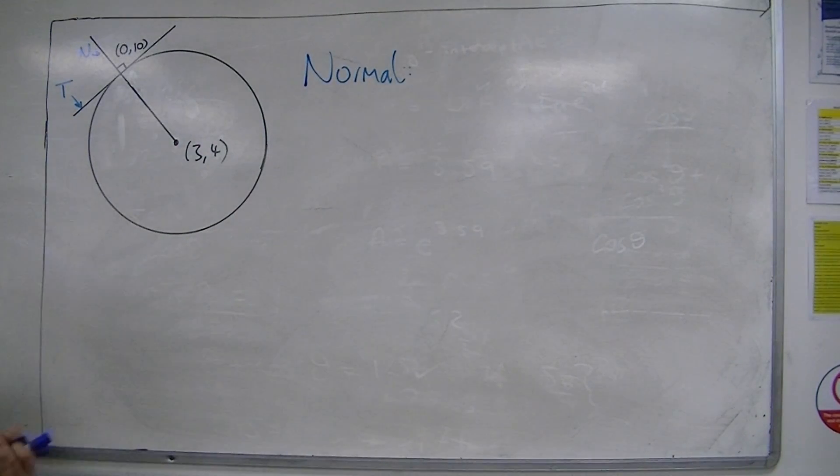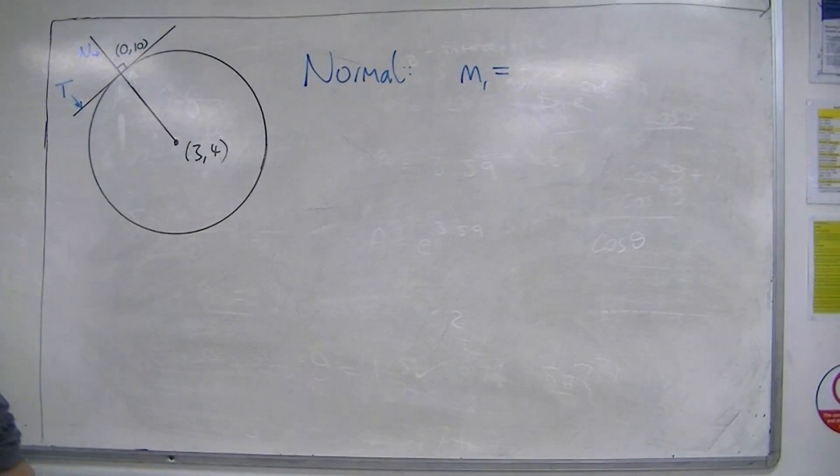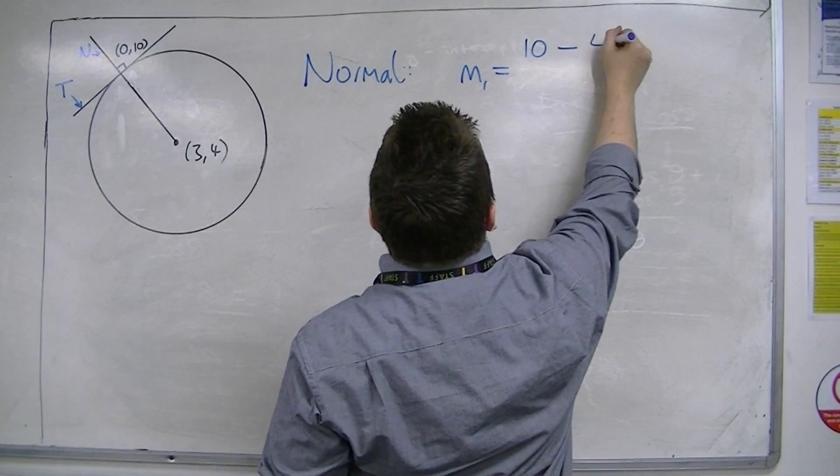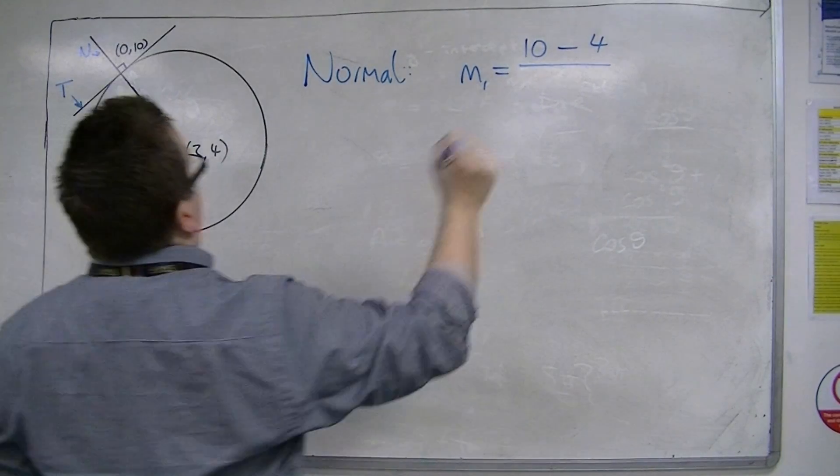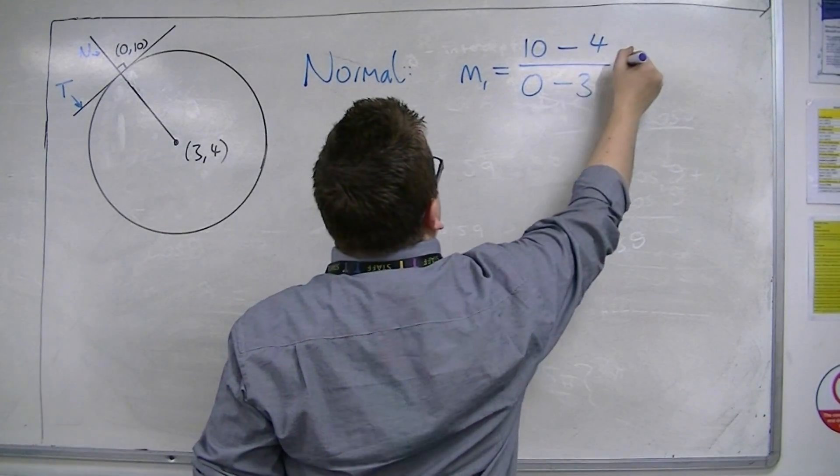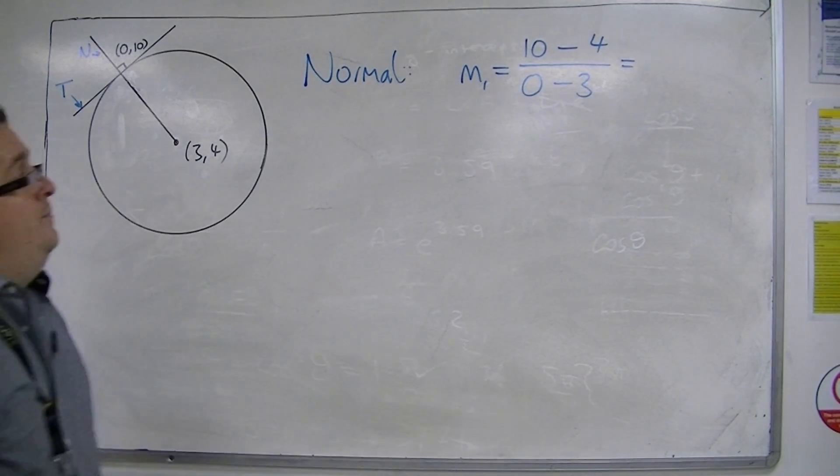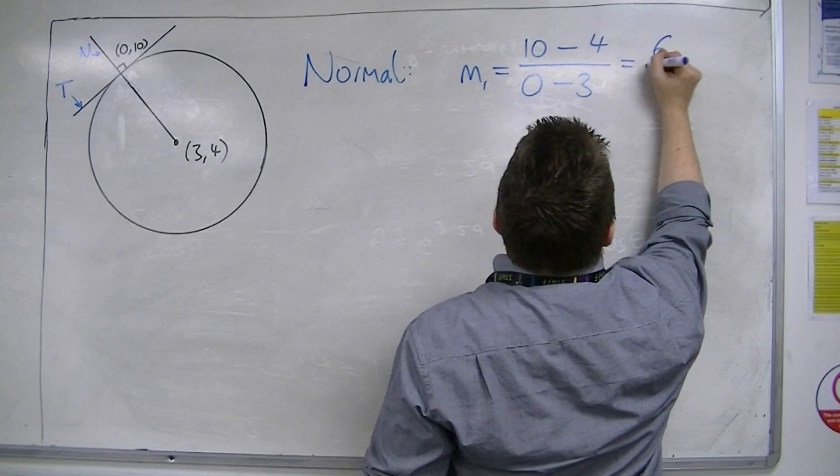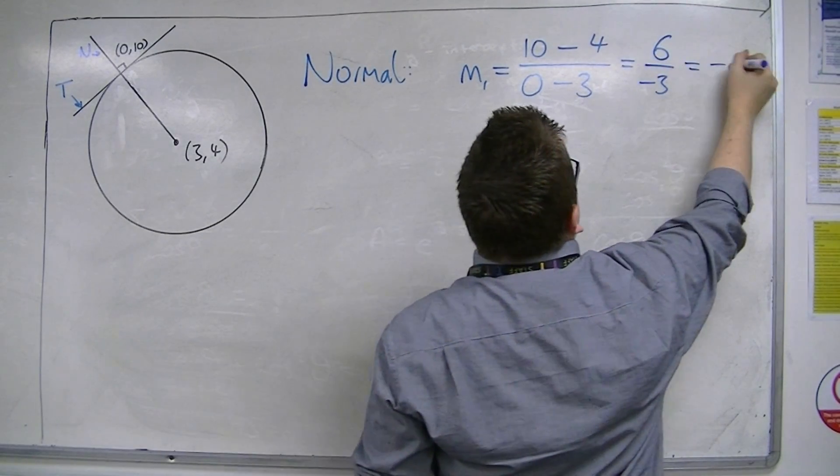Now, first of all, I'm going to need to find the gradient between those two points. So, the gradient, let's call it M1, is the difference in the y-coordinates divided by the difference in the x-coordinates. So, I've got 10 minus 4 on the top, 0 minus 3 on the bottom. So, I've got 10 take away 4 is 6. 0 take away 3 is minus 3. So, 6 divided by minus 3 is minus 2.